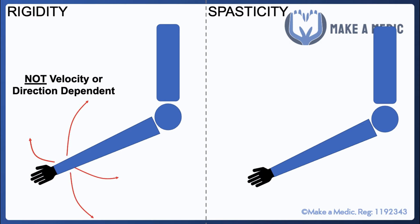The key point about rigidity is that it's an increase in muscle tone that is not velocity dependent or direction dependent. So if you try to flex or extend an arm that is described as being rigid, it doesn't matter if you try to flex and extend it particularly quickly or slowly — you will still encounter the same amount of resistance. In addition, irrespective of the direction or plane in which you move the arm, you will encounter resistance. Rigidity is classically associated with Parkinson's disease, and is sometimes described as lead pipe rigidity, which provides an analogy for the type of resistance that's felt.